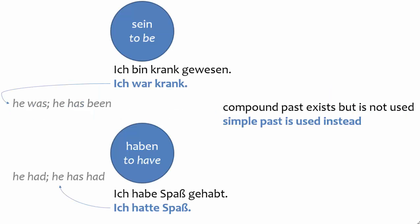One of those special situations is with a handful of very common verbs. The verbs sein and haben are good examples of two very common verbs that are usually formed in the simple past rather than the compound past. There is a compound past tense for each of these verbs, but it's rarely used. Use simple past for sein and haben instead. For the full conjugations of these verbs in the simple past, do a quick online search.